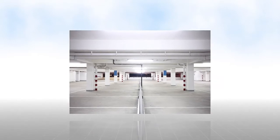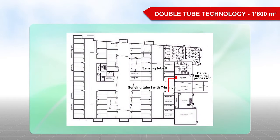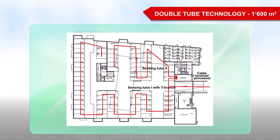Two sensing tubes can be connected to the Securisense ADW535, which is known as double tube technology. This means that an area of up to 1,600 square meters can be monitored with one cable terminal processor.